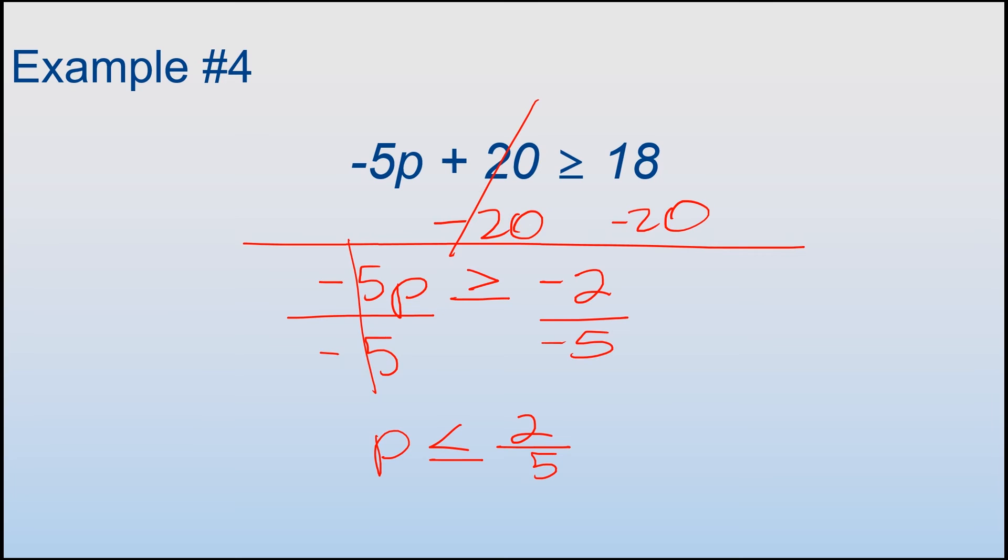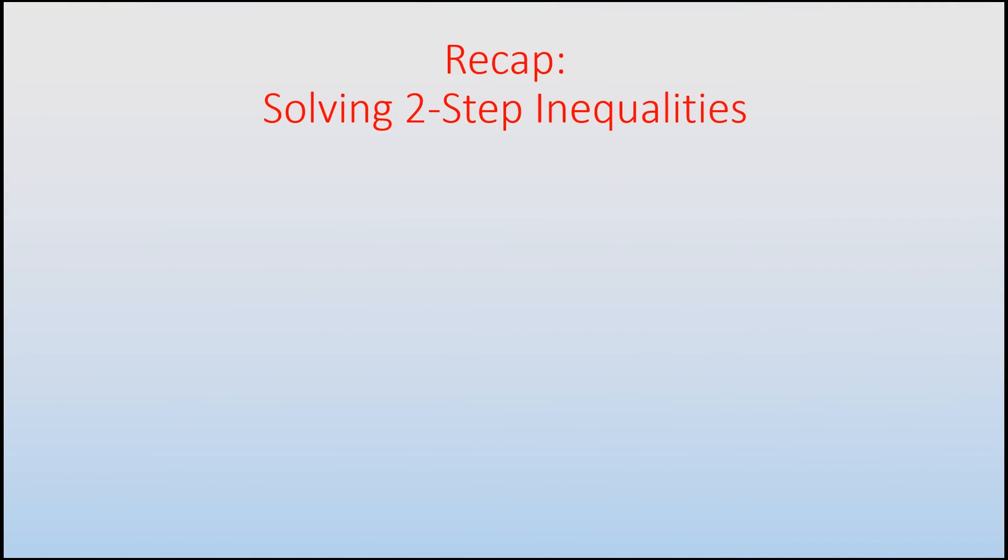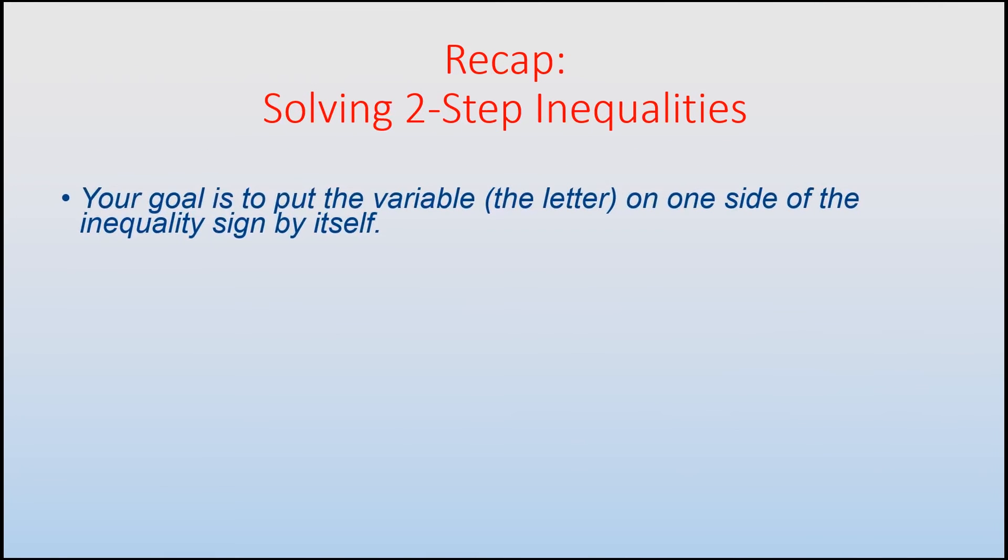That was my last example. Let's take a recap on how to solve two-step inequalities. When solving two-step inequalities, you want to remember that your goal is to put the variable or the letter on one side of the inequality sign by itself. In order to do that, you need to remember to use the inverse operations to isolate the variable.